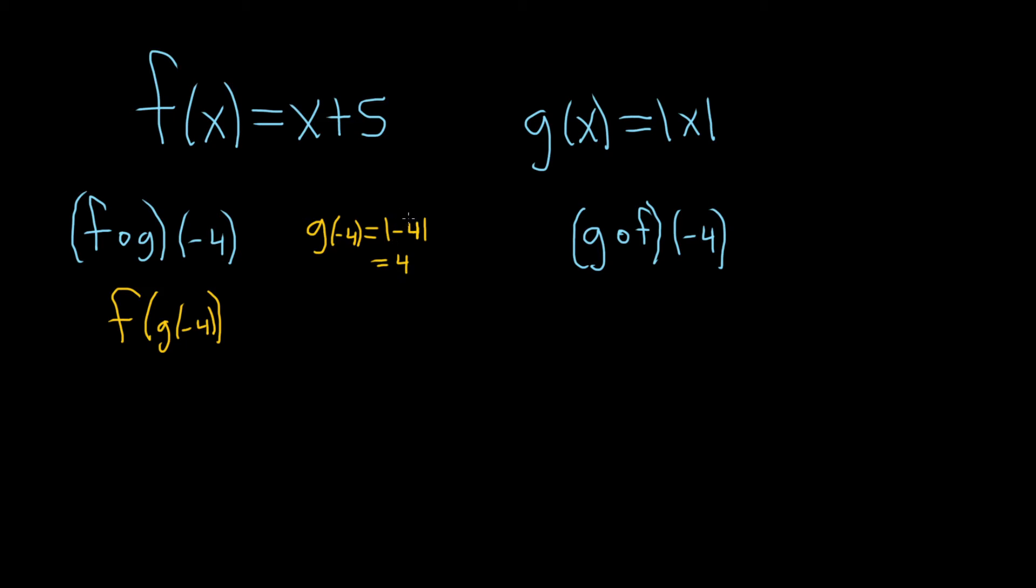Right? Because whenever you have an absolute value and you have a number, it always makes it positive. Unless you have 0 of course, the absolute value of 0 is 0, but otherwise it's going to become positive.